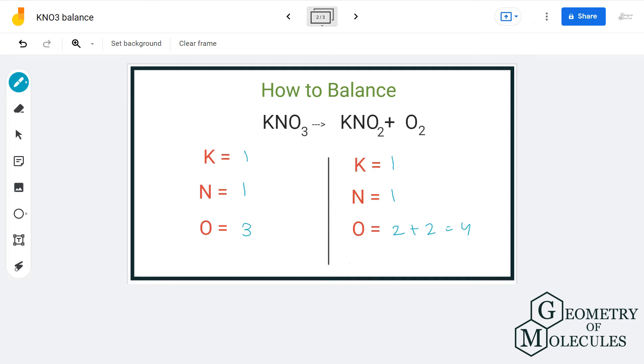To balance it, let us multiply KNO3 by two. That in turn will give us two potassium, two nitrogen, and six oxygen atoms. To balance it out, we will multiply KNO2 by two. That will give us two potassium, two nitrogen, and two into two plus two.